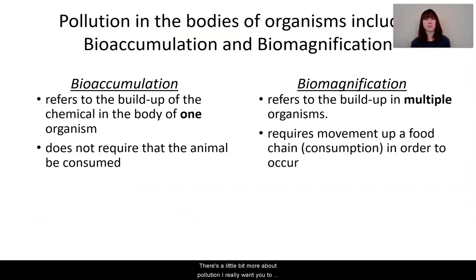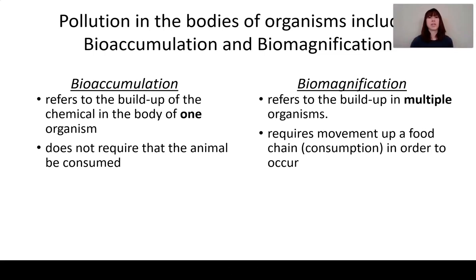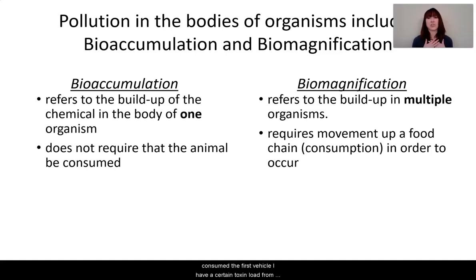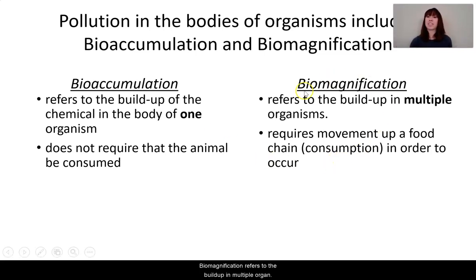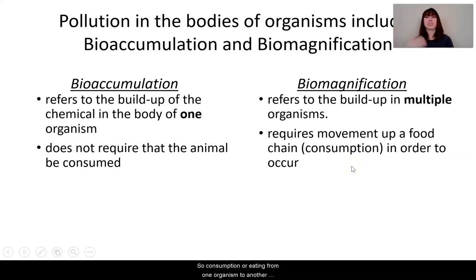Here's a bit more about pollution that's really relevant to orca whales. Pollution in the bodies of organisms involves two processes. One is called bioaccumulation, which refers to the buildup of a chemical in the body of one organism — it does not require that organism to be consumed. For example, I have a certain toxin load just from being a human living on earth, from eating food and being in the environment. The other process is biomagnification. Let's look at some pictures to help understand this.